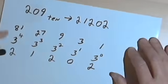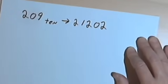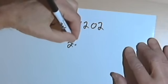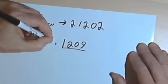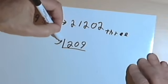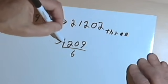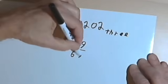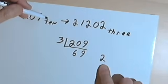But let's try this the other way. The other system says: take that 209 and divide it by the new base, which is 3. 3 goes into 209 — it goes into the 20 six times, and there'll be a 2 left over from that, then it goes into 29 nine times with a remainder of 2. I'll write that remainder over to the right.